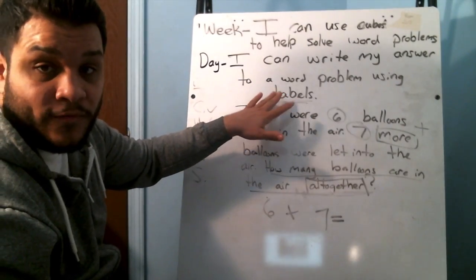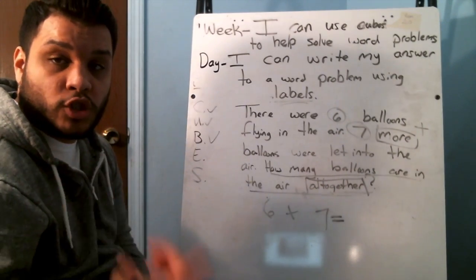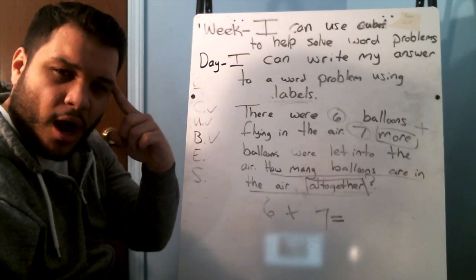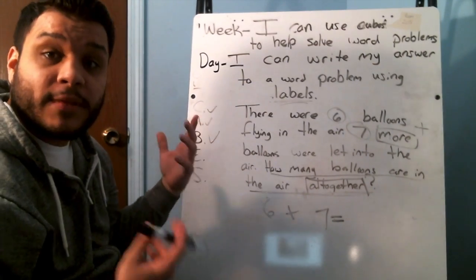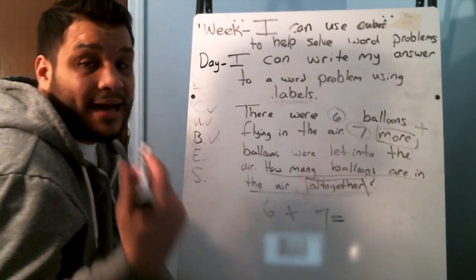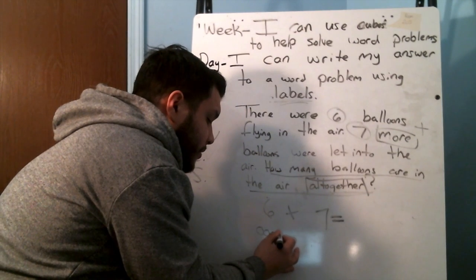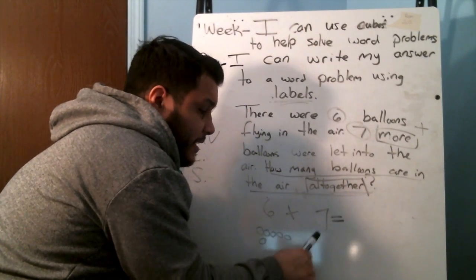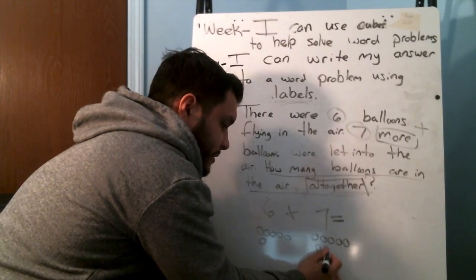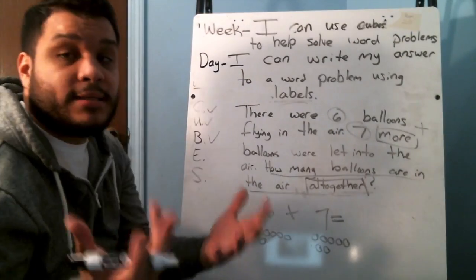Don't forget that today we're focusing in on labeling — the thing that tells us what we're talking about. Today we're talking about balloons, so our label is going to be 'balloons.' Six plus seven equals what? I said I was going to draw a picture, so let's draw it. One, two, three, four, five, six — that's my first group. Now seven more: one, two, three, four, five, six, seven. Now I'm going to put them all together to see what my answer is.